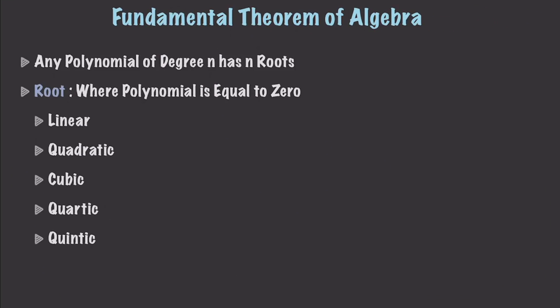The fundamental theorem of algebra states that any polynomial of degree n has n roots. A root is where the polynomial is equal to zero. This brings us back to what we talked about a couple videos ago — the degree of a polynomial — which is just the highest exponent a variable in a polynomial is raised to.